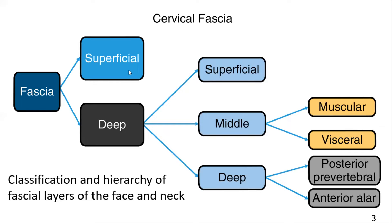Before we discuss other deep neck spaces, we must know a few basic things about cervical fascia. This flowchart shows the classification and hierarchy of fascial layers of the face and neck. Here we are mainly concerned with the deep layer. The buccopharyngeal fascia — the muscular part of the middle layer — and the alar and pre-vertebral layers are part of the deep layer.